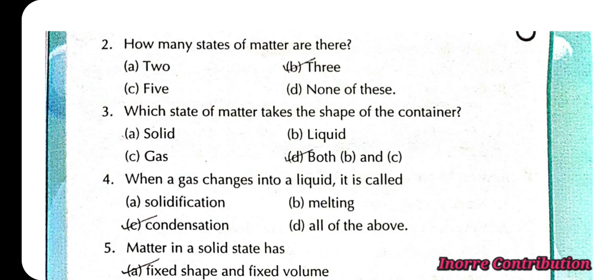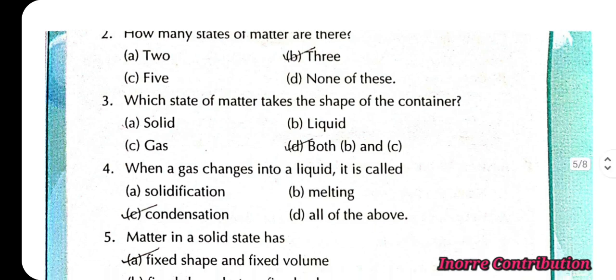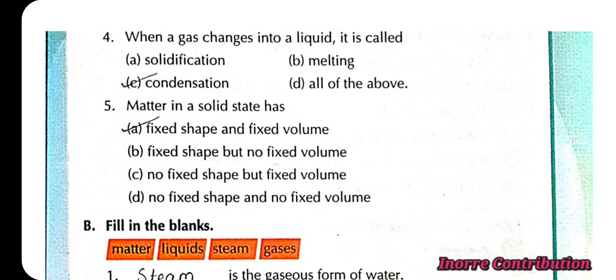Fourth one, when a gas changes into a liquid, it is called option C, condensation. Fifth one, matter is a solid state has option A, fixed shape and fixed volume.